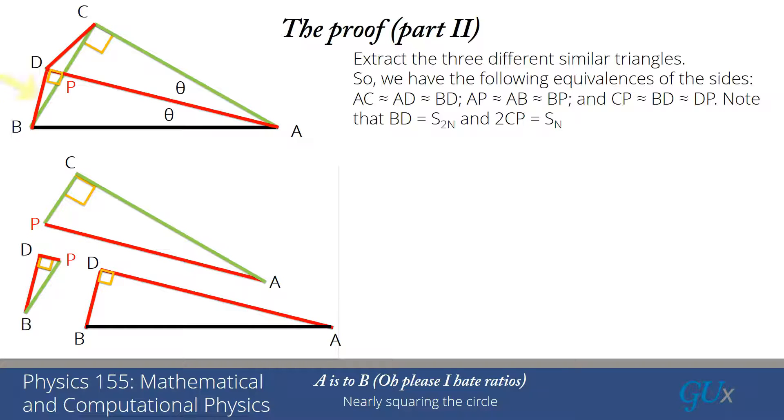Now, an important thing to note is the side BD is actually the edge of the 2N-gon, and twice the side CP, because if I take CP plus PB, I get CB. And that is the length of the edge of the N-gon, which we're going to call SN.